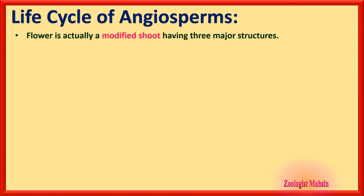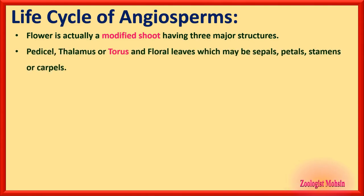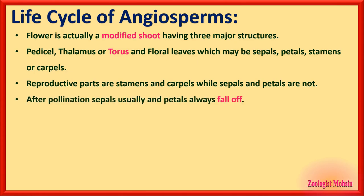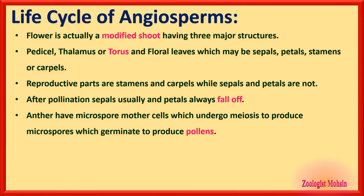Life cycle of Angiospermia: a flower is actually a modified shoot having three major structures — pedicel, thalamus or torus, and floral leaves. Floral leaves may be sepals, petals, stamens, or carpels; these four structures are collectively called floral leaves. Reproductive parts are stamens and carpels, while sepals and petals are not reproductive. After pollination, sepals usually and petals always fall off.